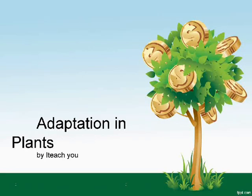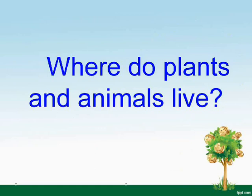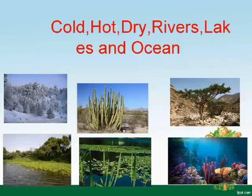Adaptation in Plants. Where do plants and animals live? They live in cold, hot, dry places, rivers, lakes, and ocean.